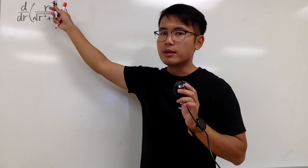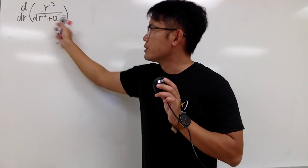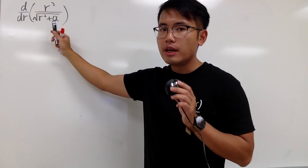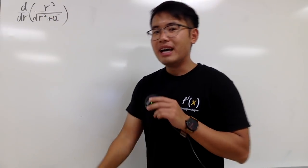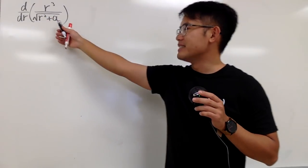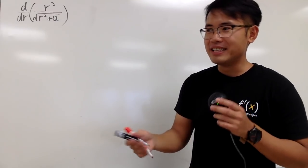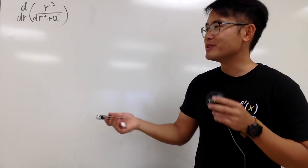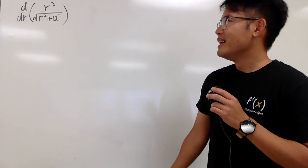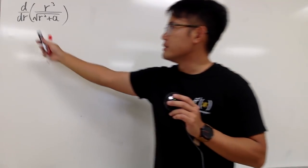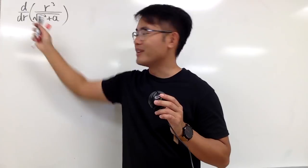We'll be differentiating r to the third power over square root of r squared plus a, where a is a constant. You can imagine a is like 9 — when you differentiate 9, you get 0, so when you differentiate a, you get 0. r is the variable, so pay attention to 'd whatever' right here.